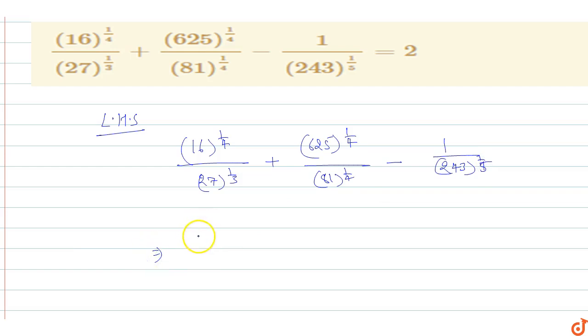So 16 is 2 power 4 whole power 1 by 4 upon 27 is 3 power 3 whole power 1 by 3 plus 625 is 5 power 4 whole power 1 by 4 upon 81 is 3 power 4 whole power 1 by 4.